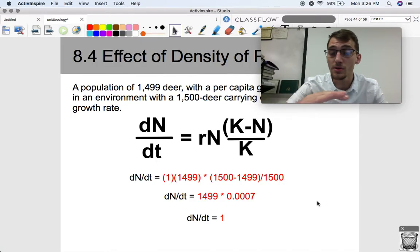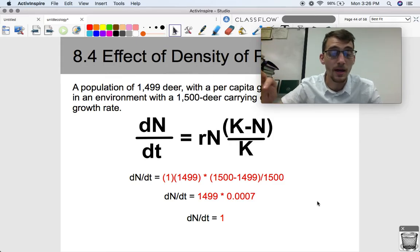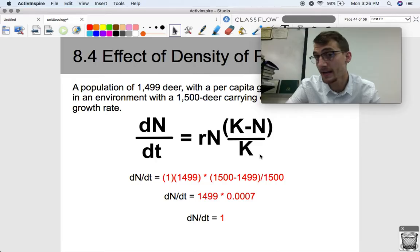Now, real populations do overshoot and then come back down, overshoot, come back down, but it will eventually level off at what the carrying capacity is, provided that carrying capacity is not degraded by environmental destruction.